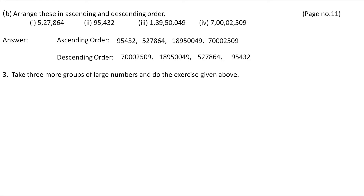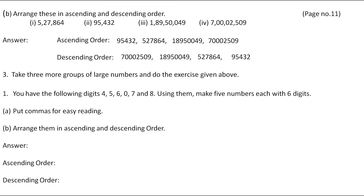The next question is: take 3 more groups of large numbers and do the exercise given above. I want you to solve these questions on your own and send me the answers in the comment box — I will check them. The next question: you have the following digits — 4, 5, 6, 0, 7, 8. Using them, make 5 numbers each with 6 digits. Put commas for easy reading and arrange them in ascending and descending order.